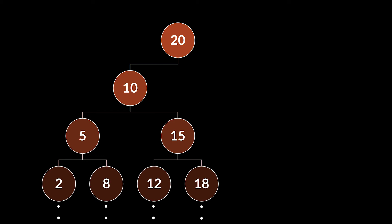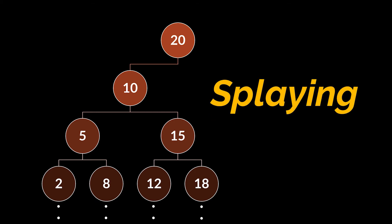To bring the accessed element to the top of the tree we do what we call splaying. While splaying we may encounter several situations, just like the ones we encountered with AVL trees and red-black trees. The first situation we are going to talk about goes by the zig situation.